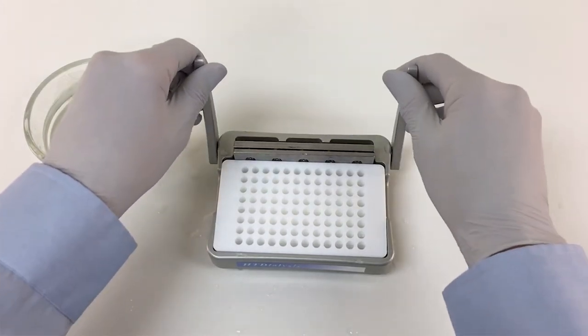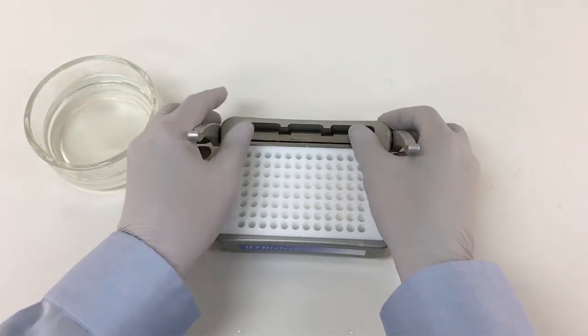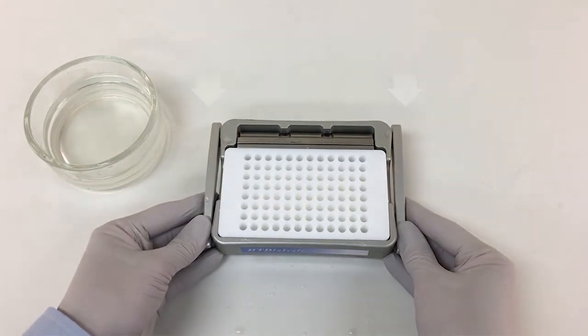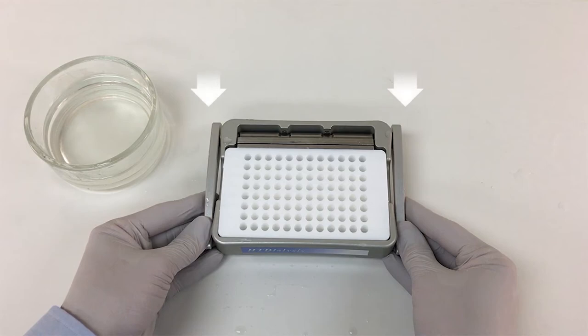The pressure plate allows the Teflon block to be loaded with 1 to 8 dialysis membranes depending on the sample number required in the experiment. Tighten the assembled unit with even pressure using both hands to rotate the cam levers.